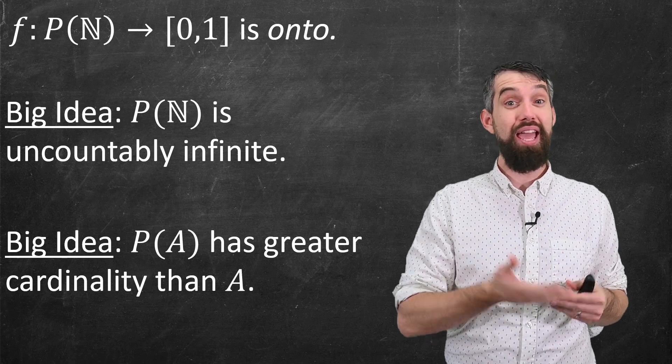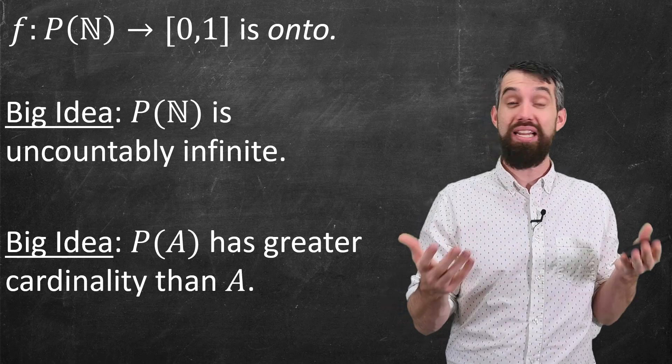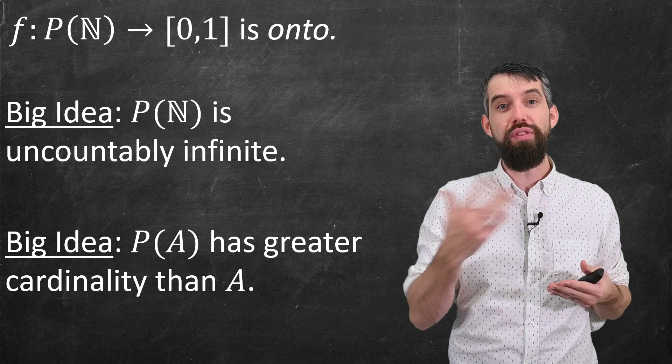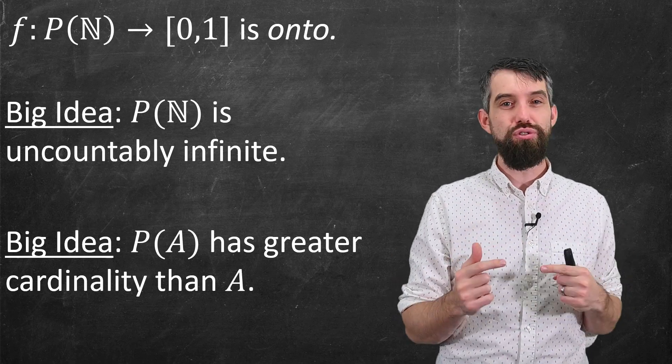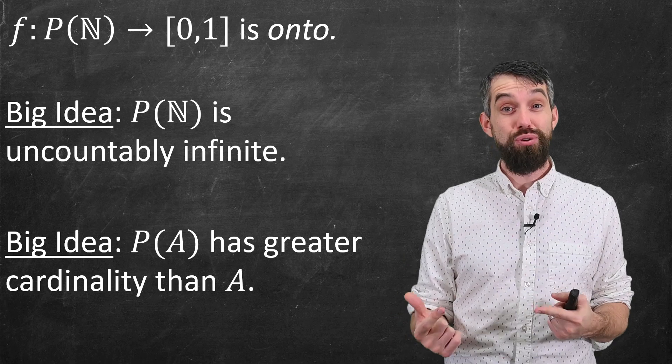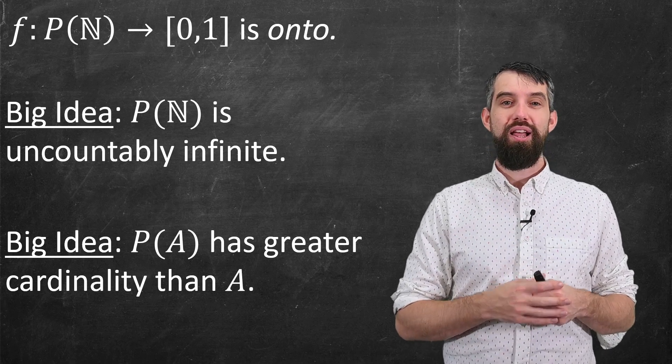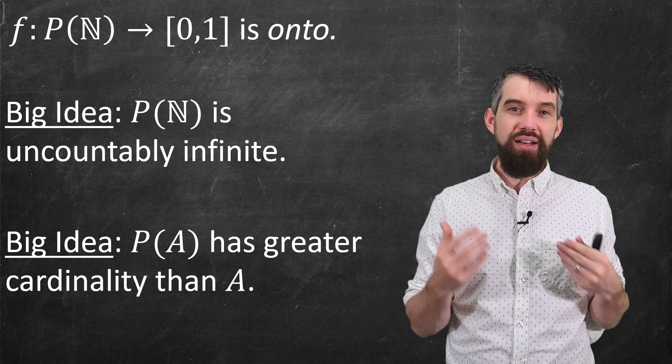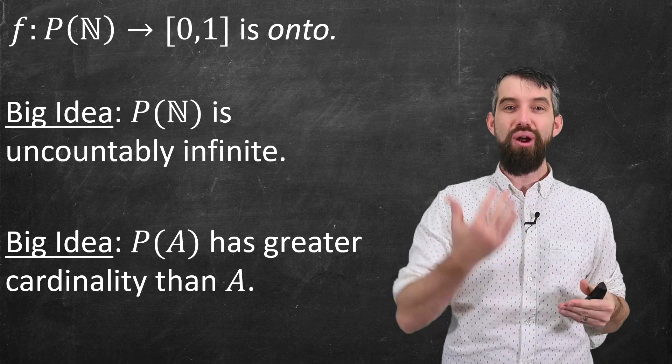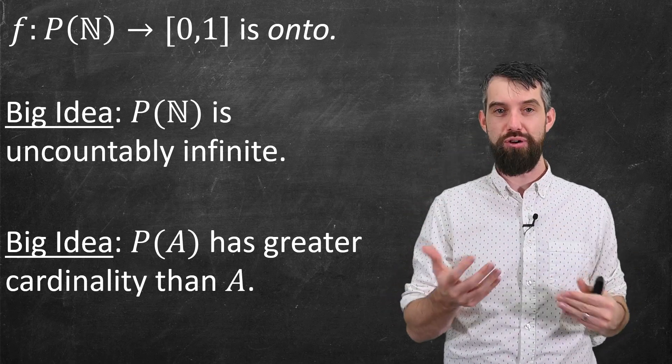We already saw this was true when A was finite, like A had size n, then the power set of A was 2^n, a bigger number. But it's also true if A is infinite. So in our example with the natural numbers, which are countably infinite, their power set is uncountably infinite, which is a larger so-called cardinality than the natural numbers.